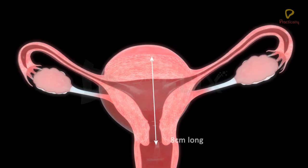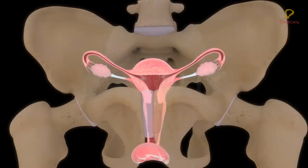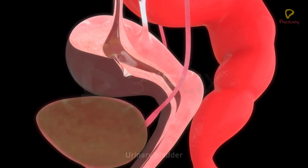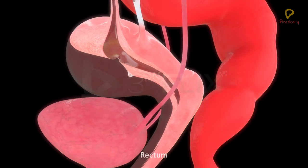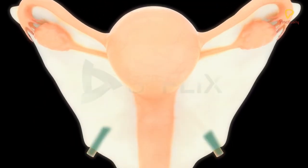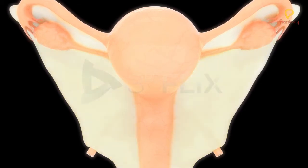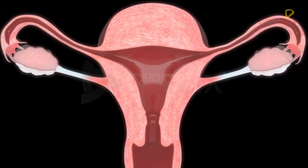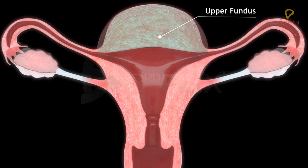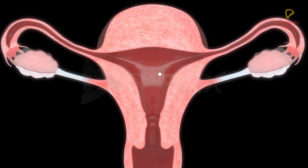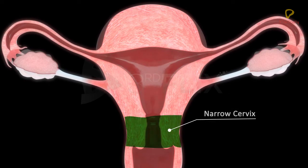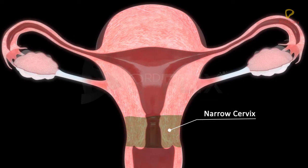It is about 8 cm long. It is located in the pelvis, dorsal to the urinary bladder and ventral to the rectum. The uterus is supported by ligaments attached to the pelvic wall. The uterus is differentiated into three regions: the upper fundus, middle corpus or body, and the lower narrow cervix.